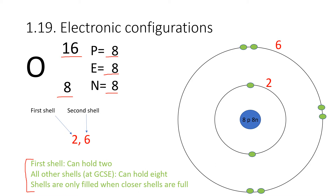So if we have eight electrons, we can fit two in the first shell, as you can see on the right, and six in the second shell — that's eight electrons in total.